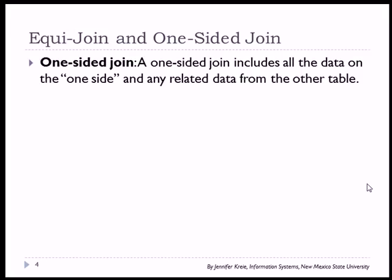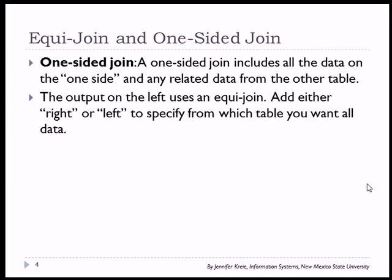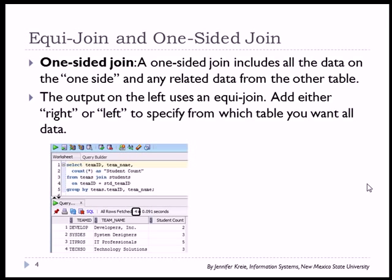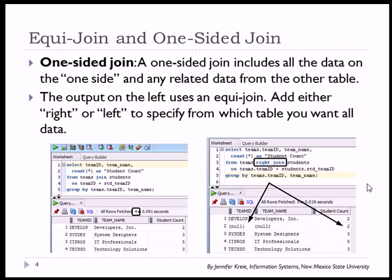So a one-sided join is a way that you can deal with viewing all the data from a table, even if there's no related data in another table. The output on the left uses an Equijoin. Add a right or left as a word in front of the word join, and you will get a one-sided outer join.